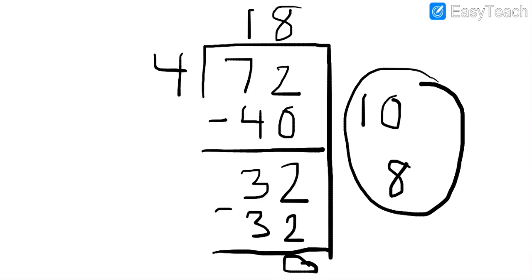So 72 divided by 4 is 18. And we want to record our remainder. So we're going to write capital R, which stands for remainder, 0. And that is our final answer. Have a good day.